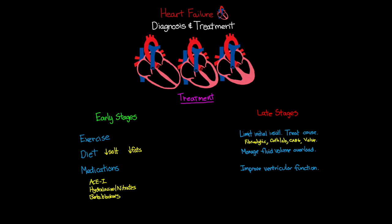Managing fluid volume overload is primarily done through diuretics and continued fluid and sodium restriction. Patients are placed on set fluid and low-sodium diets. We typically use loop diuretics, though thiazides or other types may be added. For patients with severe symptoms, IV administration of a loop diuretic may be required to remove fluid quickly.